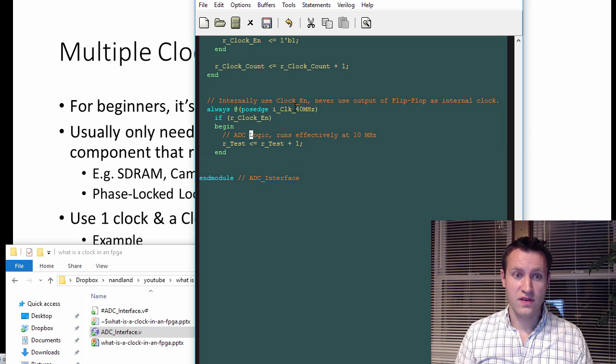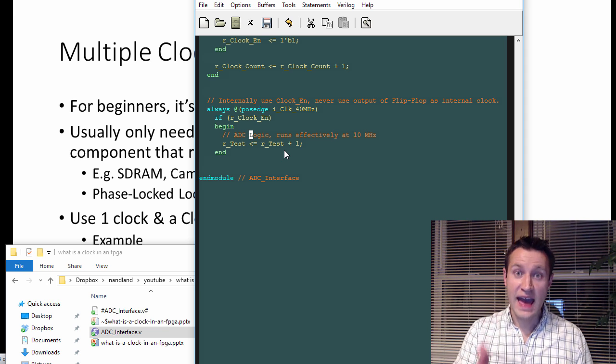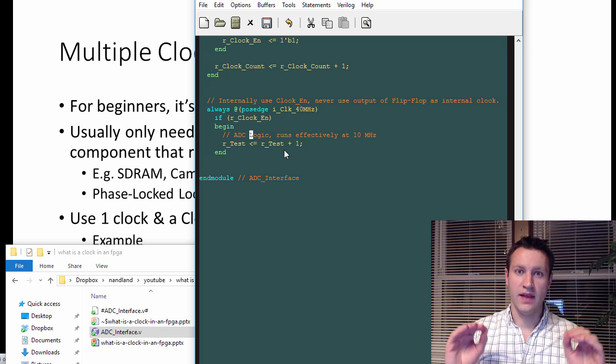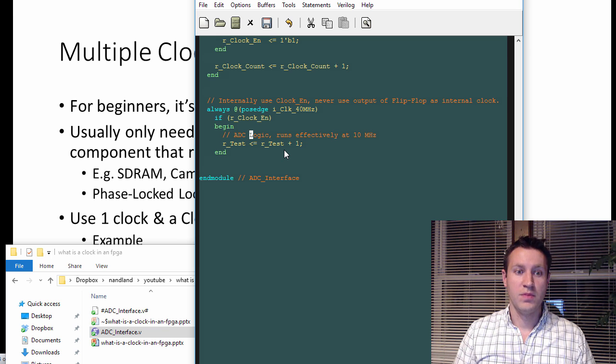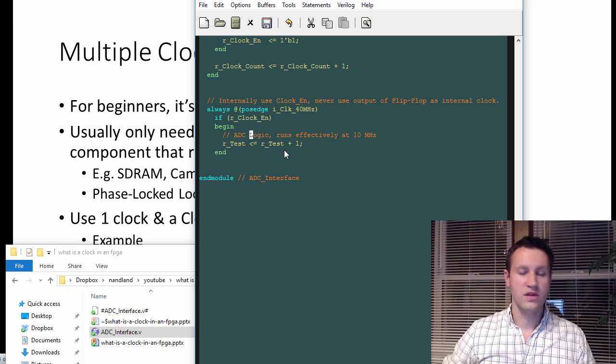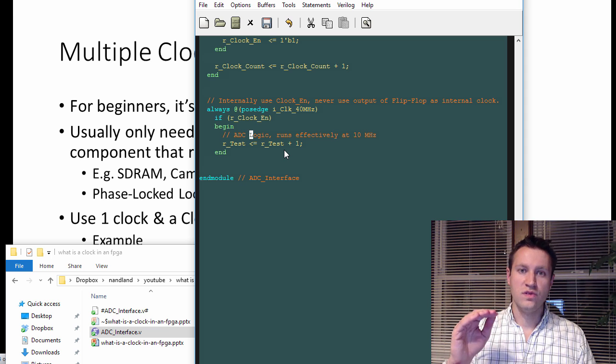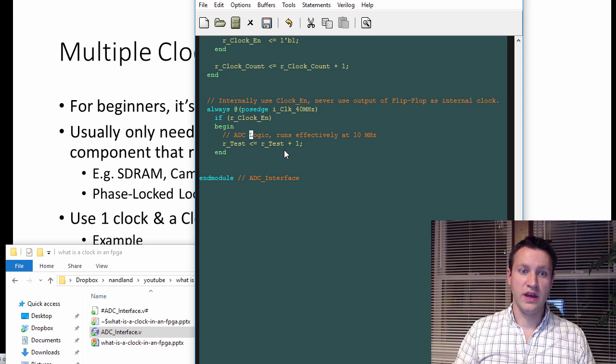So effectively, this always block is running at 10 megahertz. It's being clocked with a 40 megahertz clock, but effectively it's only changing every 10 megahertz. And that is a super important thing that a lot of beginners miss because they'll, like I said, they'll try to generate some clock with some always block and then use that new clock somewhere else. Don't do that. You use one clock in your design and use clock enables to actually chunk through the data.